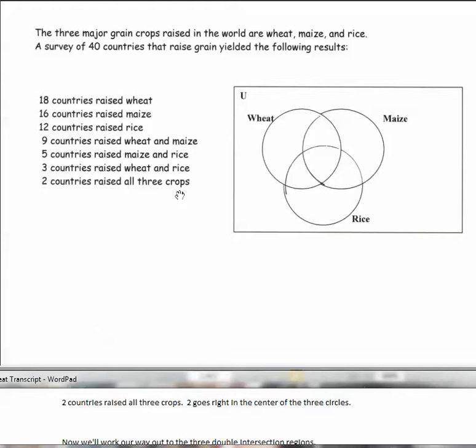The middle of the diagram is at the bottom of the information list. Two countries raised all three crops. So that number two goes right in the center of the three circles.